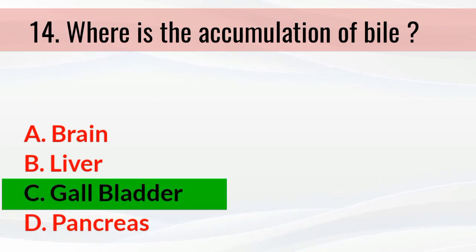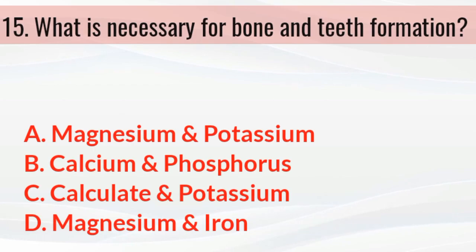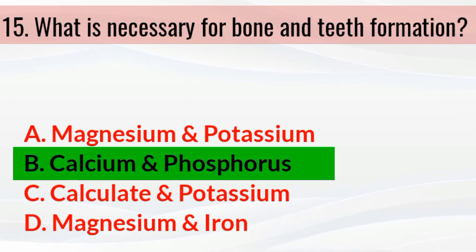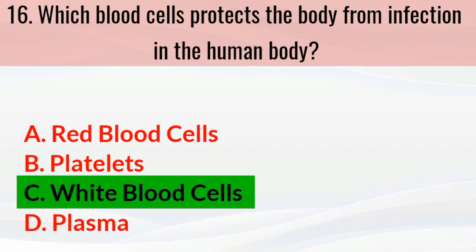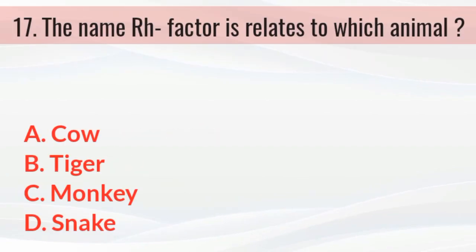Which gland secretes growth hormone? The answer is the pituitary gland. Where is bile accumulated? The answer is the gallbladder. What is necessary for bone and teeth formation? The answer is calcium and phosphorus. Which blood cells protect the body from infection? The answer is white blood cells.